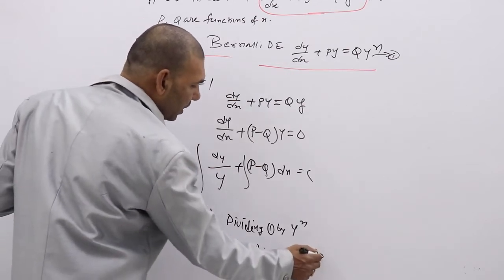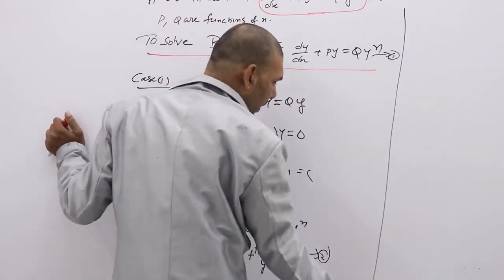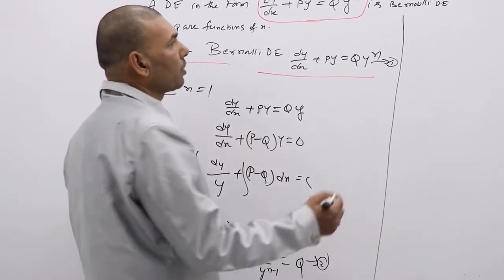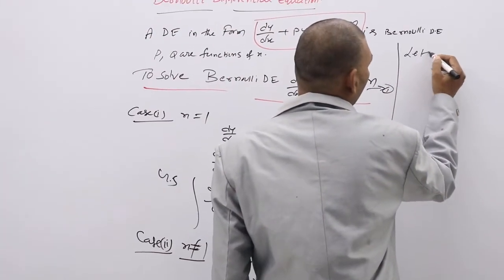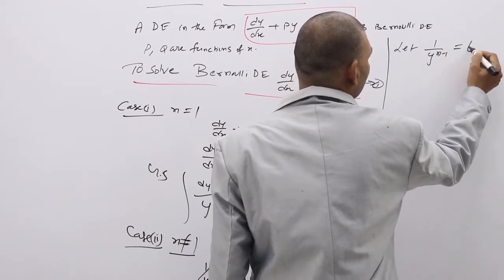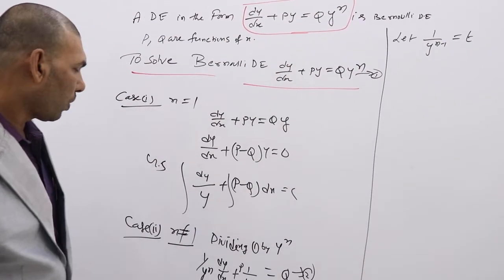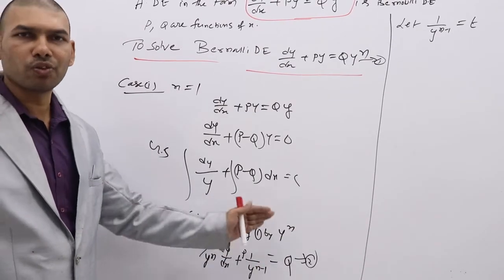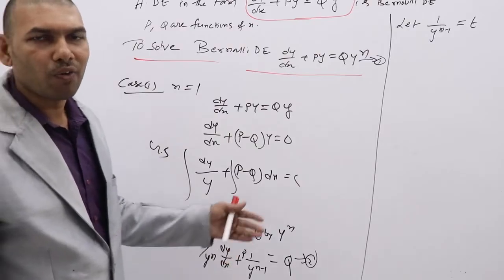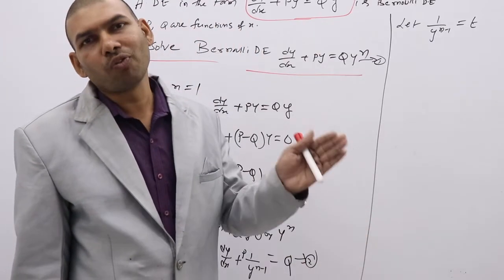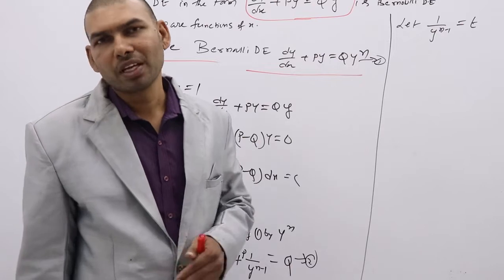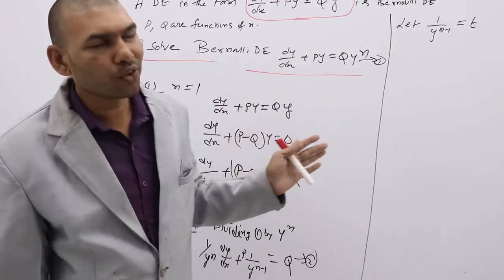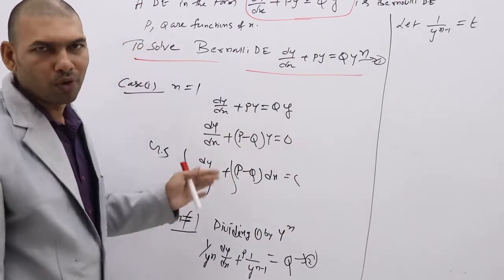To reduce this to linear, assume 1/y^(N-1) equal to T. That means if you have y squared in the RHS, divide with y squared and assume 1/y as T. If you have y cubed in the RHS, divide with y cubed and assume 1/y squared as T. If you have y^4, divide with y^4 and assume 1/y cubed as T.